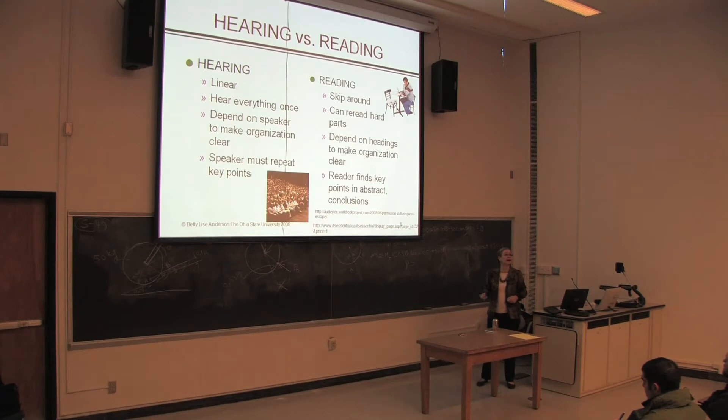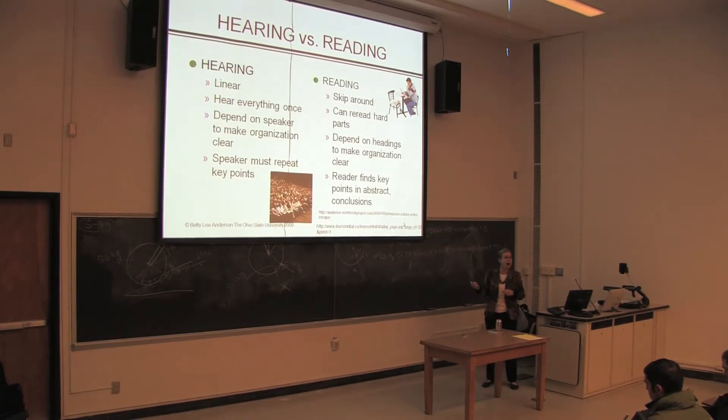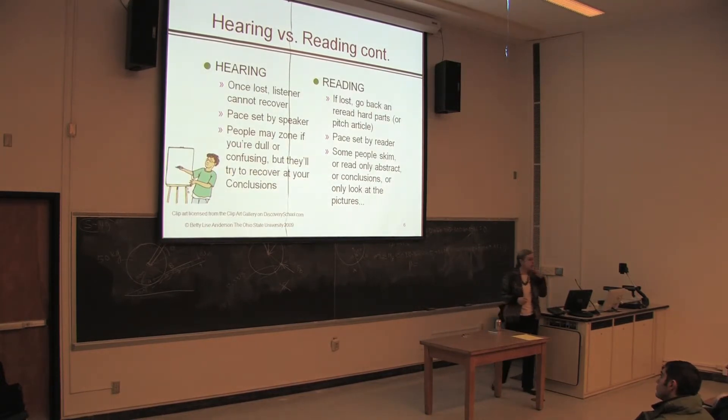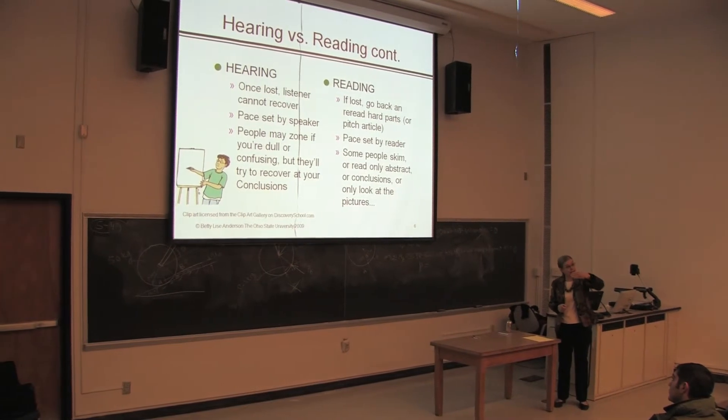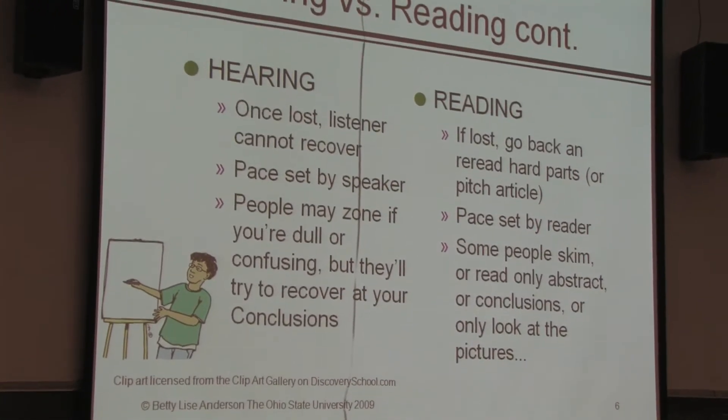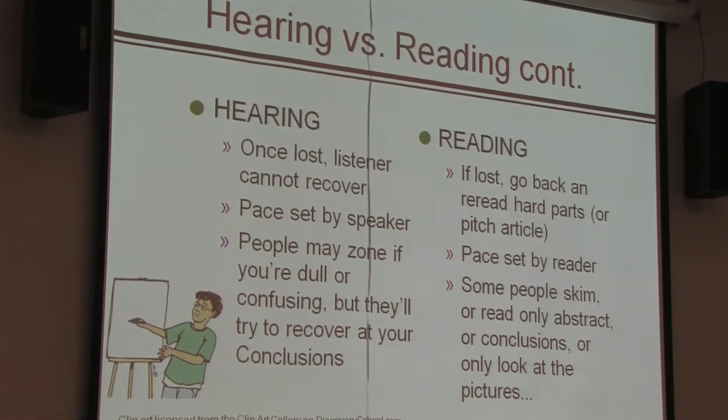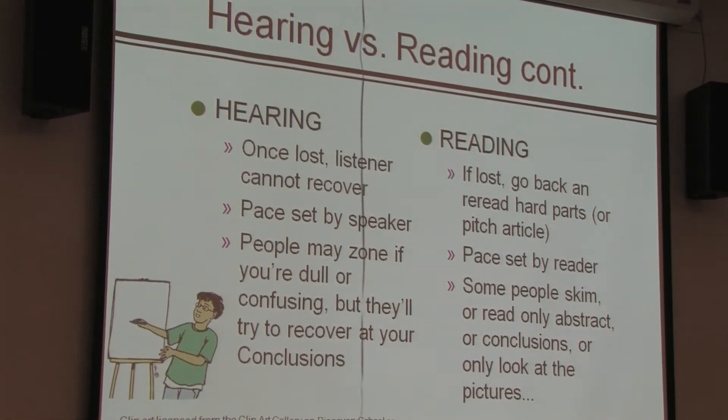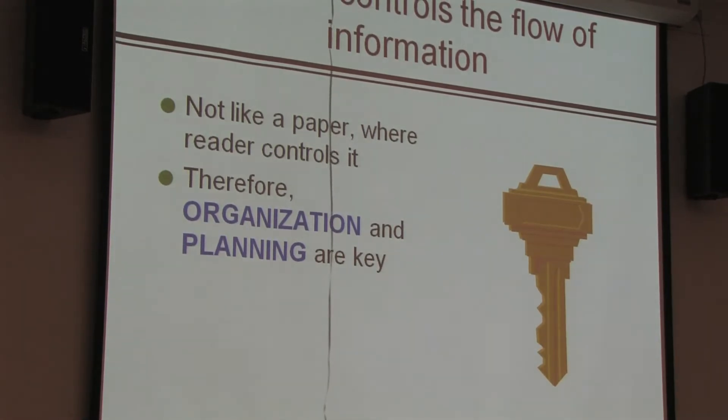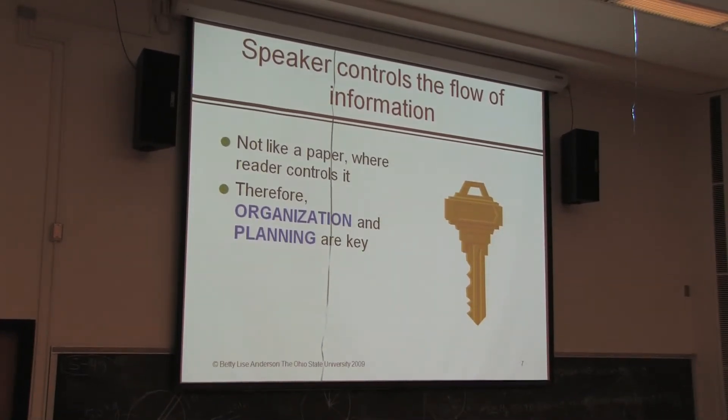In a paper, you know where to find the key points because they're in the abstract and the conclusions, and some people don't even read the stuff in between. Some people only look at the pictures. You can't control that. In a talk, people are going to listen to what I say. So hearing versus reading is different because, and this is especially important in technical talks, if you lose somebody because usually we have a technical thread of stuff that leads to some conclusion, if you lose people because you showed them a frightening equation in the middle, they're not going to come back. They're not going to come back until the very end of your presentation when they know they have to write their trip report. So the speaker controls the flow of information, which is different than when you write for a reader. It's important to organize and plan carefully.